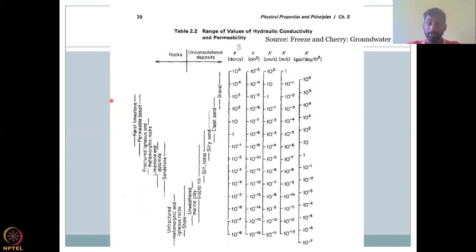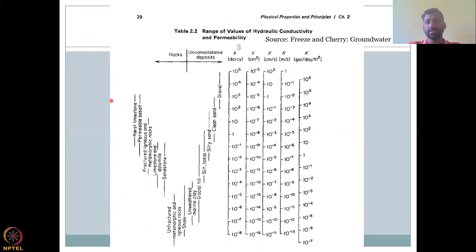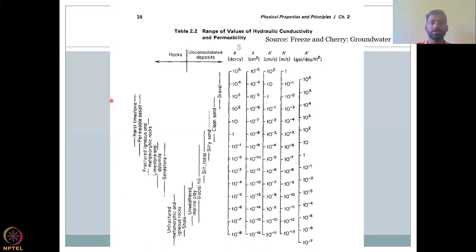Let's look at values and units. Hydraulic conductivity K has units of velocity — meters per second — whereas permeability k has units of centimeters squared, also called Darcy after the inventor. Darcy is equal to centimeters squared times 10⁻². The small k is intrinsic permeability and big K is hydraulic conductivity. We will look at Darcy's experiment in the coming lecture.